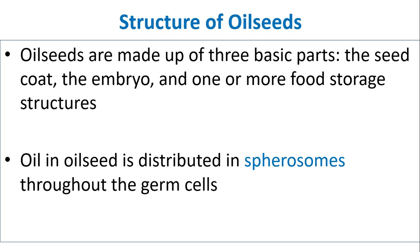Structure of oil seeds: Oil seeds are made up of three basic parts — the seed coat, the embryo, and one or more food storage structures. Oil in oil seeds is distributed in spherosomes throughout the germ cells.